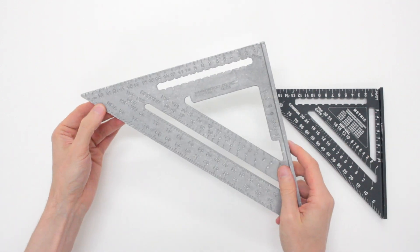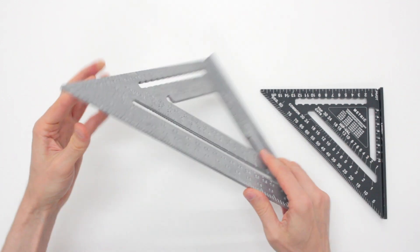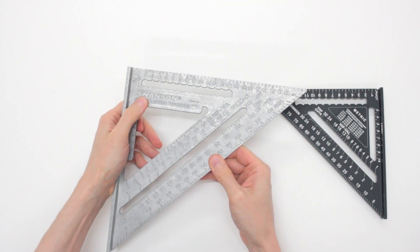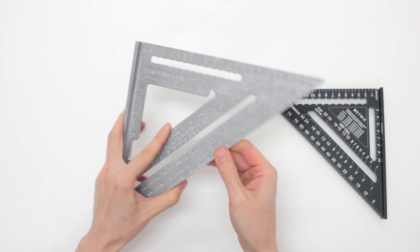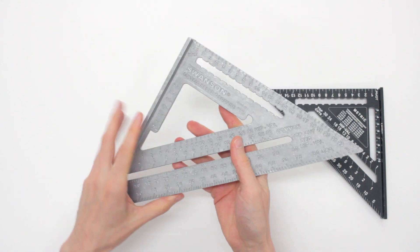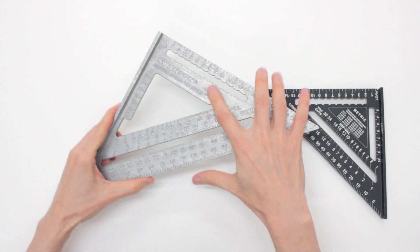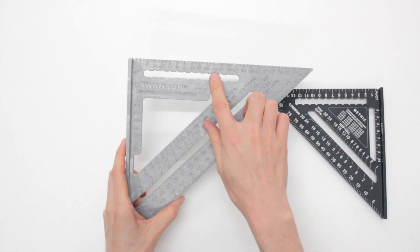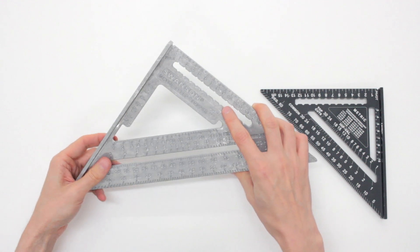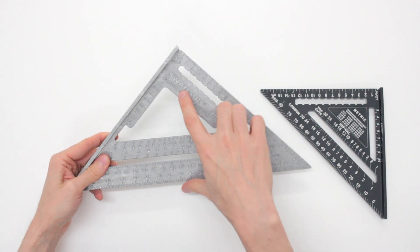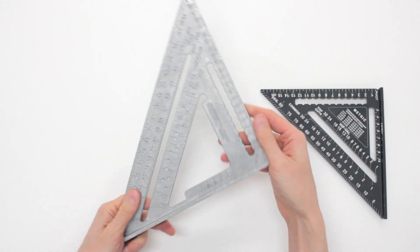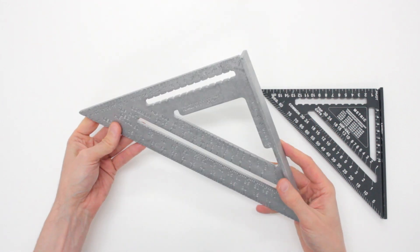The other weird difference between the metric speed square from Swanson and their original 7-inch speed square is that while both have recessed numbers, the metric one lacks any paint inside those numbers, which makes them really hard to see, whatever the light.